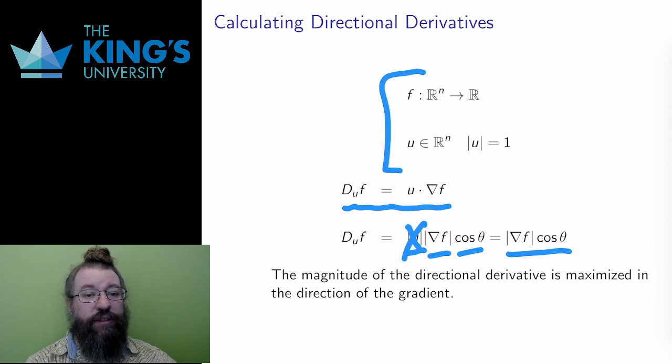When the angle is 0, the directions are the same, and the direction is the gradient direction, and that maximizes the rate of change, which is what the gradient already did. It was the direction of greatest change. The change in other directions is exactly captured by this cosine, which measures how close any direction is to the gradient.